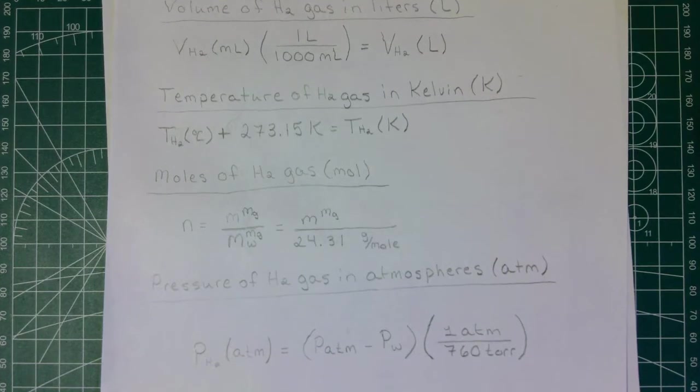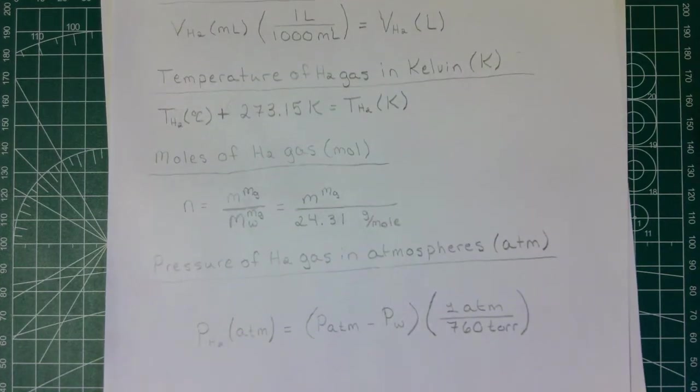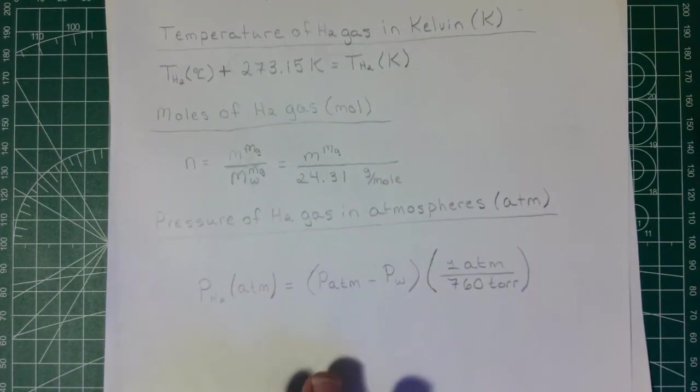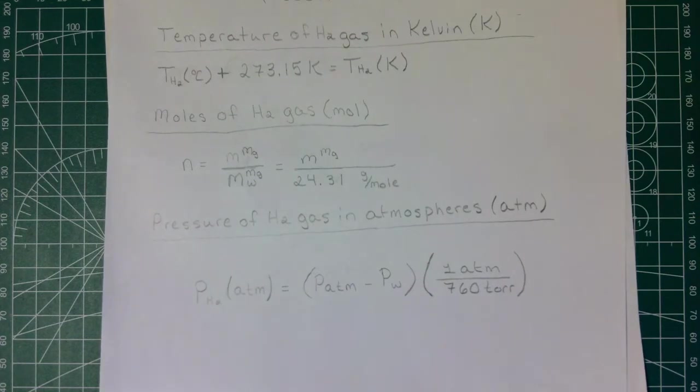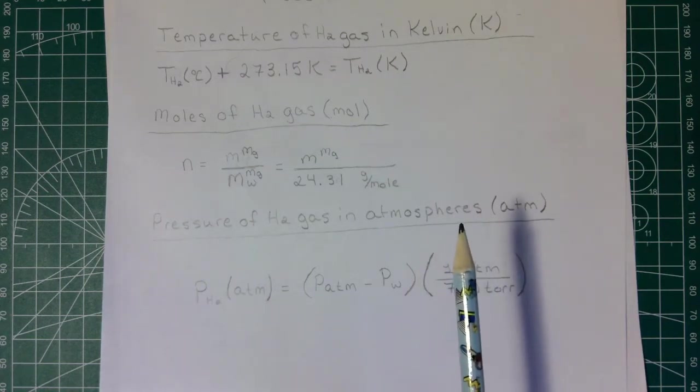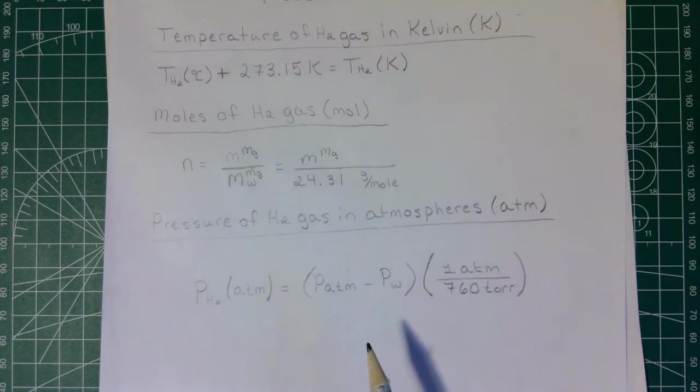Next we need to figure out the pressure of the H2 gas. So we said that the total pressure is going to be our atmospheric pressure. We're going to subtract out the vapor pressure that we looked up in table 2—that's going to be our pressure of H2—and since these values were given to us in Torr, we're going to need to multiply by a conversion factor to get units of atmosphere.